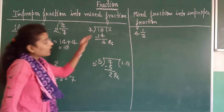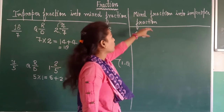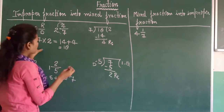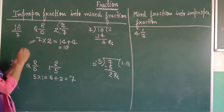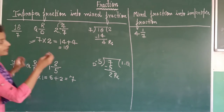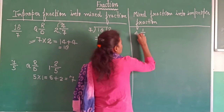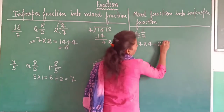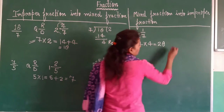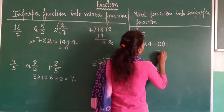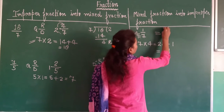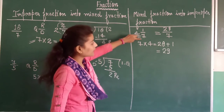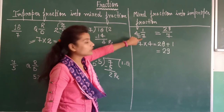Ab hum mixed fraction ko improper mein change karte hain. Mixed fraction diya gaya hai. Improper mein change karne ke liye kya karenge — pehle denominator 7 ko whole number 4 se multiply karenge: 7 fours are 28. Phir 28 mein numerator 1 add kar denge to aaega 29. Denominator as it is likhenge — answer hai 29 upon 7. Denominator yaad rakhne ka trick: D for down, D for denominator.